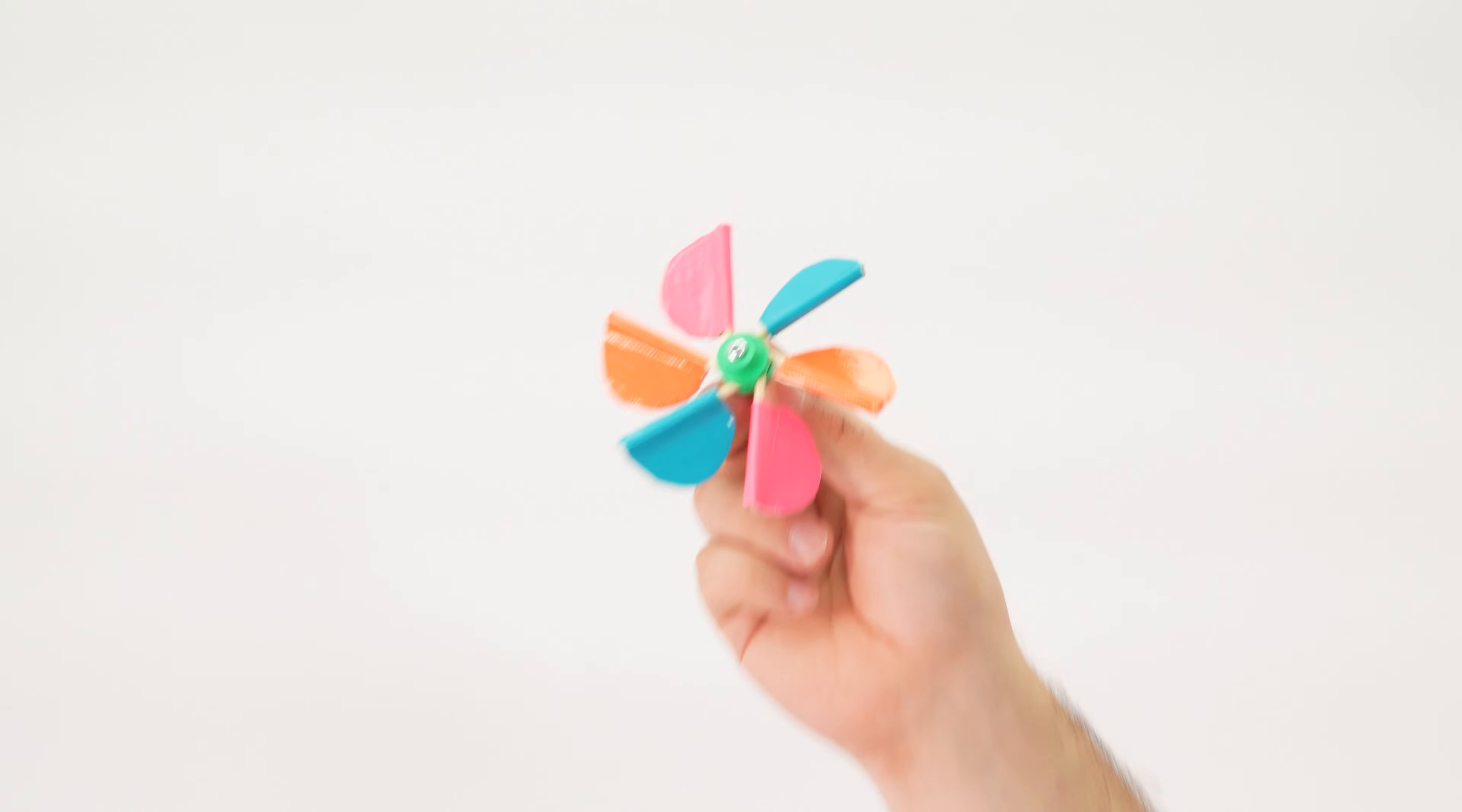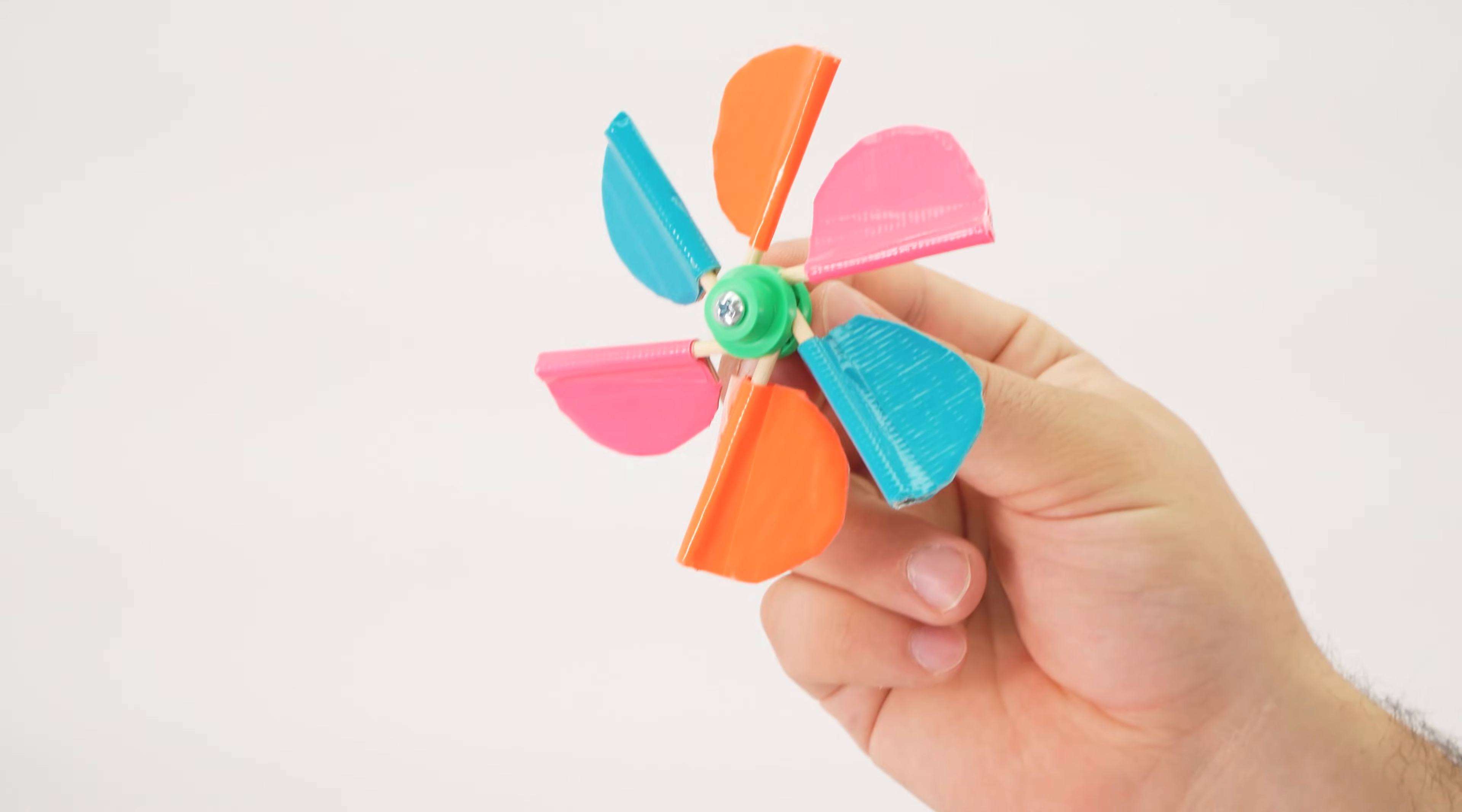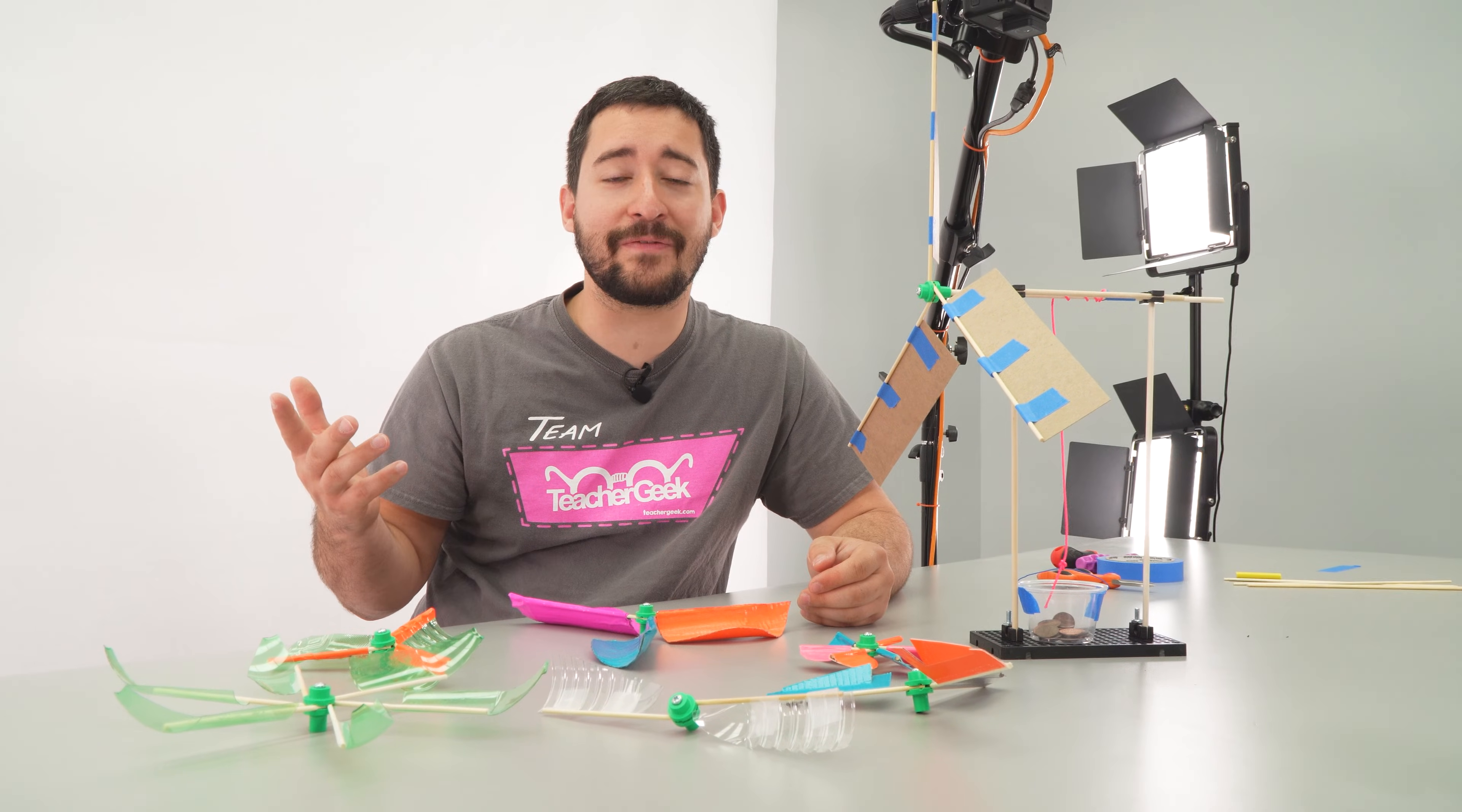Once you have that down, experiment with different blade designs. Big blades. Little blades. Lots of blades. Just a couple blades. Blades made of bottles. Blades made of bottles covered in duct tape. Blades made of cereal boxes covered in duct tape. Blades made of just duct tape. As you can tell, we love duct tape around here, but there are tons of materials you can use. Just check the recycling bin for more ideas.